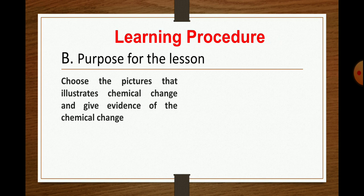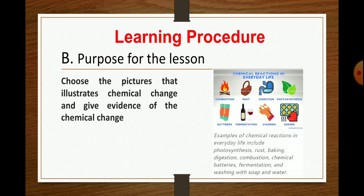Choose the pictures that illustrate chemical change and give evidence of the chemical change. As you can see in the pictures, these are all chemical reactions in everyday life that we encounter. This is an example of chemical reactions in which photosynthetic reactions, rusting, baking, digestion, combustion, chemical batteries, fermentation, and washing soap and water are all examples of chemical change. When burning, yes, there is digestion, there is of course.